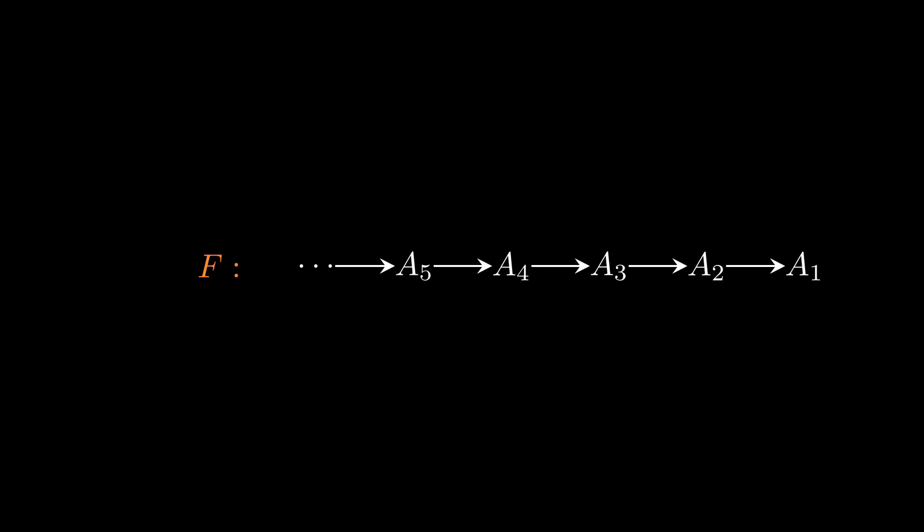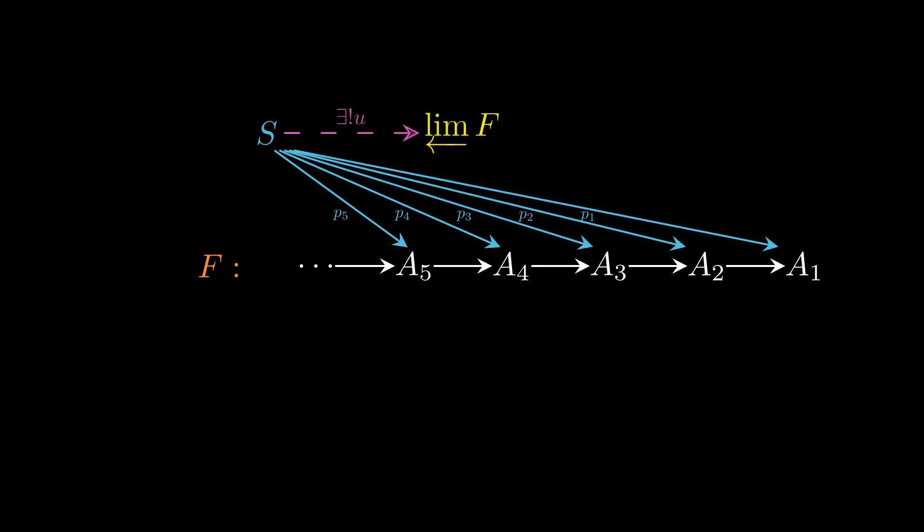Given some diagram F, the limit of F is some object with a property that it admits a projection map pi_j to each object A_j in the diagram. The point of being a limit is that a limit is universal with this property. In other words, if any other object S has its own projection maps p_j to each of the A_j's, then there exists a unique map u from S to our limit.